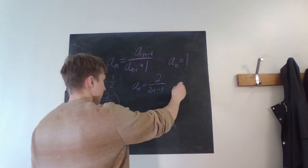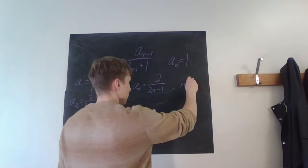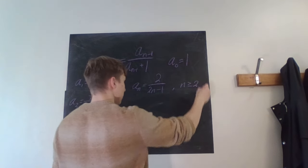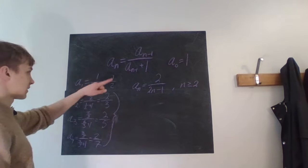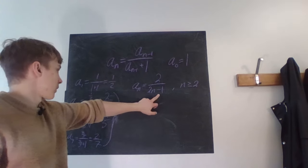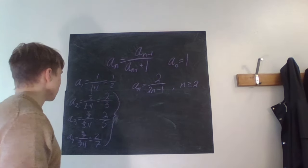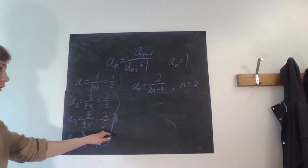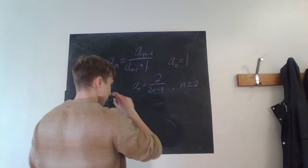So we say that is true when n is larger than or equal to two, and otherwise it's one and one half. Yes, because 2 minus 1 is just one, right? So it becomes two. But anyways, it looks like it works for all of these. So this is our explicit formula.